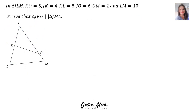Let's do an example. In triangle JLM — that's the big one — KO equals 5, JK equals 4, KL equals 8, JO equals 6, OM equals 2, and LM equals 10. We have to prove that triangle JKO, the little one, is similar to triangle JML, the big one. If we can prove that the sides are in the same proportion or ratio, then the triangles will be similar.